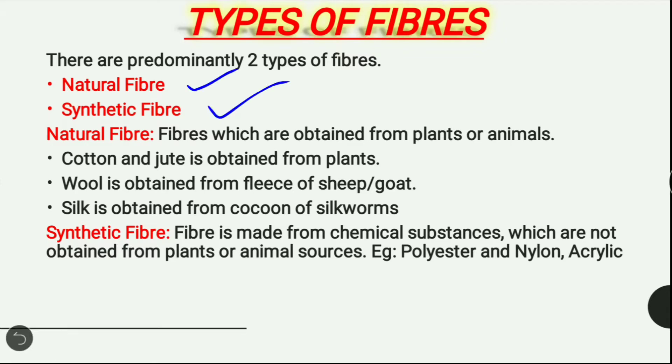Natural fibers are fibers which are obtained from plants or animals. For example, cotton, jute, wool, and silk. Jute and cotton are obtained from plants. Wool is obtained from the fleece of sheep or goat, and silk is obtained from the cocoon of silkworms.